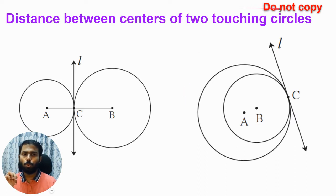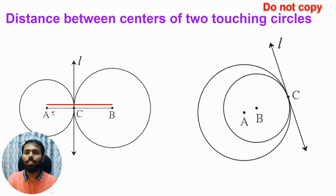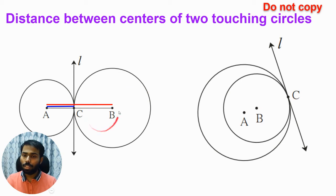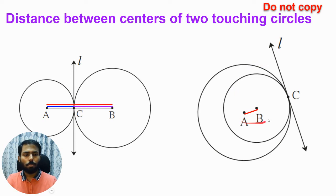Now, what is the distance between the centers of two touching circles? For the external case, the distance AB is the red line. AB is made up of two parts: AC and CB. AC is the radius of the smaller circle — the blue part — and CB is the radius of the other circle — the purple part. So the blue part plus the purple part gives you the red part. Adding the two radii gives you the distance between the centers.